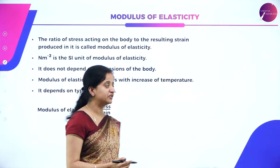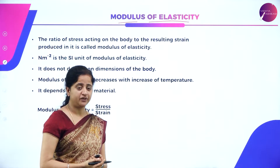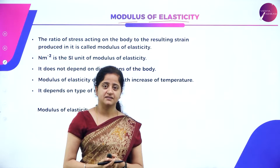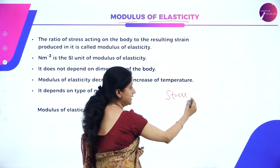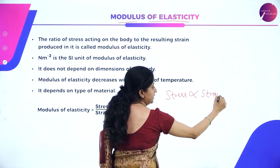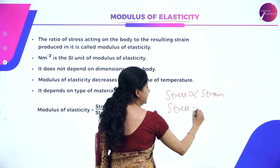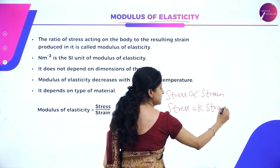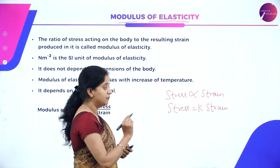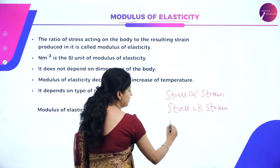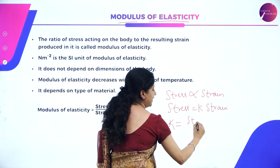In today's session, we are discussing modulus of elasticity and its different types. From Hooke's law, we know stress and strain are directly proportional, so we write stress = K × strain. This K is called the proportionality constant or modulus of elasticity.